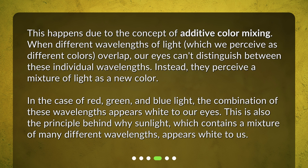In the case of red, green, and blue light, the combination of these wavelengths appears white to our eyes. This is also the principle behind why sunlight, which contains a mixture of many different wavelengths, appears white to us.